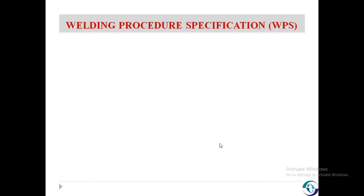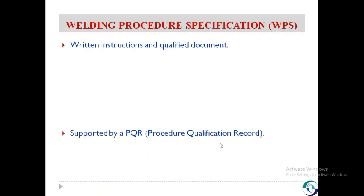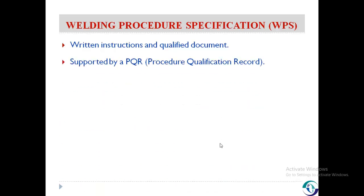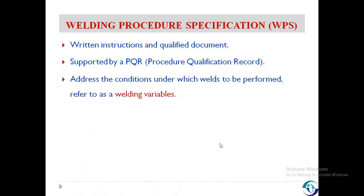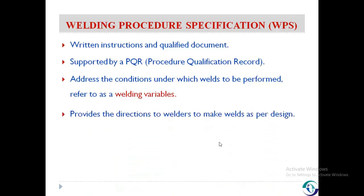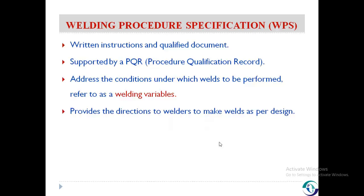What is a welding procedure specification? Welding procedure specification contains the written instructions and is a qualified document which is always supported by a procedure qualification record. The procedure qualification record contains the record of the test weld performed and the result of the test to ensure that the procedure will produce a sound weld. The welding procedure specification addresses the conditions under which the welds are to be performed, which are referred to as welding variables.